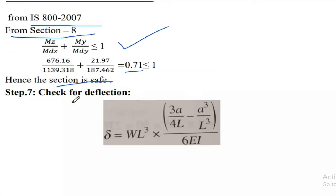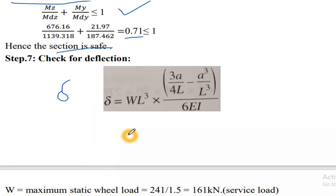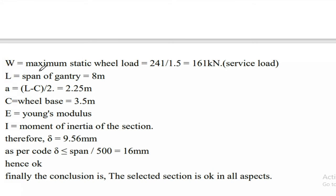Step 7: Check for deflection. Deflection formula: δ = W × L³ × (3a) / (3a by 4L − a³/L³) / 6EI. Maximum static wheel load W = 241.5 / 1.5 = 161 kN.